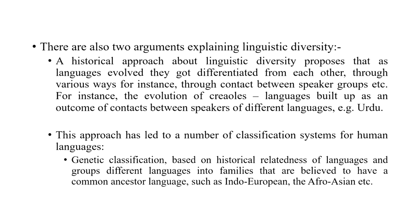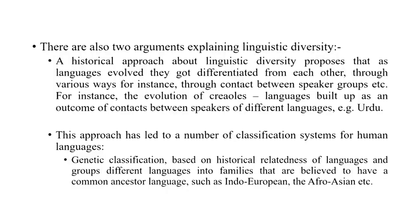There are also arguments that try to explain where linguistic diversity may be stemming from. A historical approach proposes that as languages evolved, we may have inherited the same framework, but as people started travelling away from each other, different languages started taking different evolutionary roots and over time gradually got differentiated from each other. Through various ways — sounds became differentiated, grammatical rules became differentiated — and the way speakers in a particular group interact with each other may have influenced the different evolution of these languages.